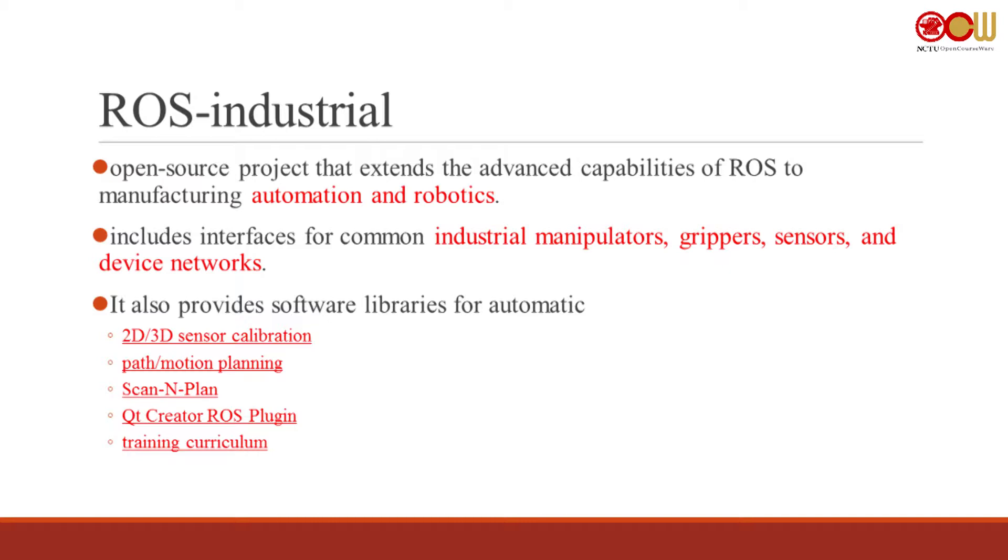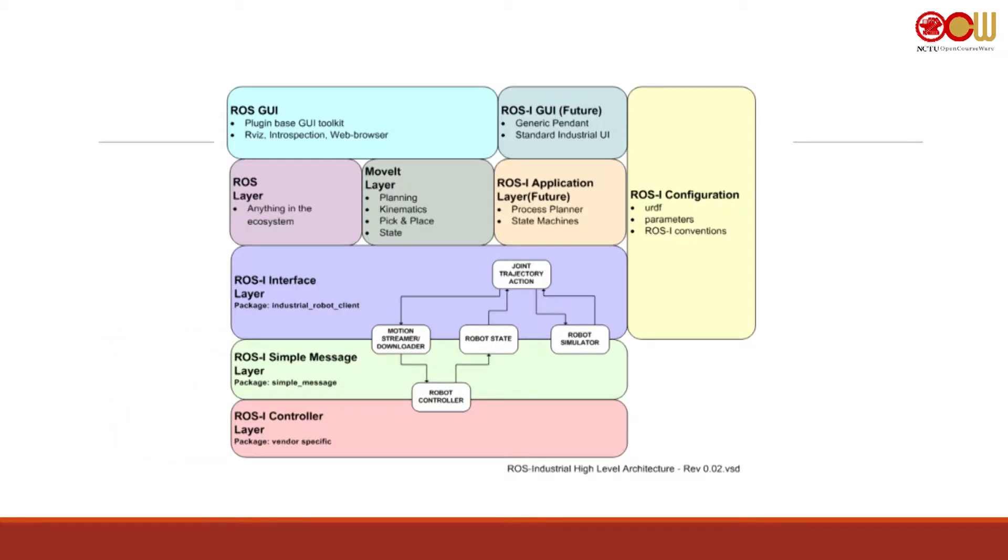First is ROS Industrial. It's an open source for ROS and it extends it to the industrial level for manufacturing, automation, and robotics. It includes many interfaces to industrial manipulators, grippers, sensors, and device networks. This is the architecture of ROS Industrial, which includes interfaces, signal messaging layer, and controller to let you communicate to the actual robot.